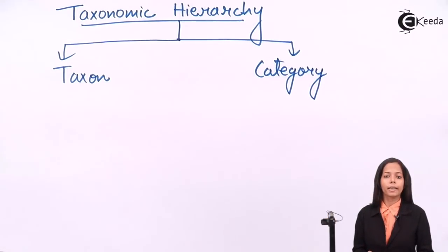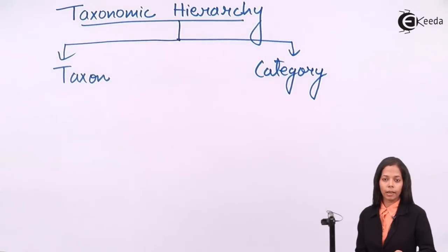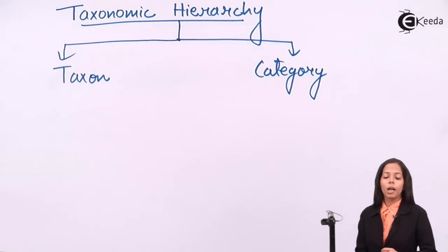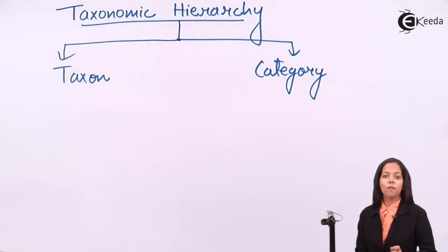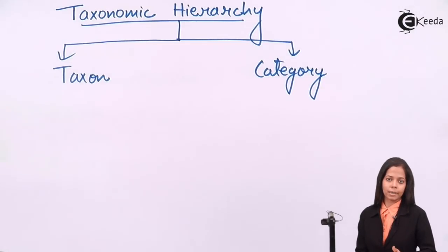What is taxon? Taxon is a group of organisms which forms a concrete unit in classification. And what is category? Category is the rank or the position given to the organism.